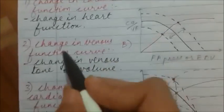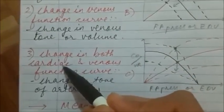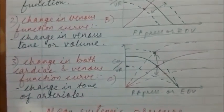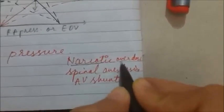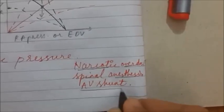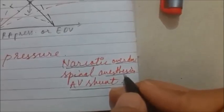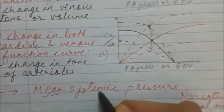To revise: change in the cardiac function curve means change in heart function; change in the venous function curve means change in venous tone or total blood volume; change in both cardiac and venous function curves means change in arteriolar tone or total peripheral resistance. The three most confusing examples from First Aid are narcotic overdose, spinal anesthesia, and AV shunt. Spinal anesthesia blocks the sympathetic system and its main effect is on venous tone. AV shunt decreases total peripheral resistance.